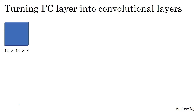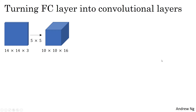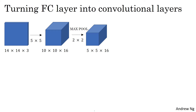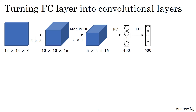Let's say that your object detection algorithm inputs 14 by 14 by 3 images — small, but just for illustrative purposes. It then uses 5 by 5 filters, 16 of them, to map from 14 by 14 by 3 to 10 by 10 by 16, then does a 2 by 2 max pooling to reduce it to 5 by 5 by 16. Then it has a fully connected layer connecting to 400 units, then another fully connected layer, and finally outputs Y using a softmax unit.